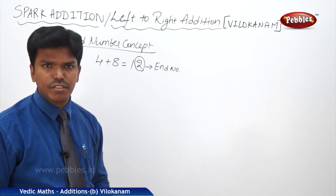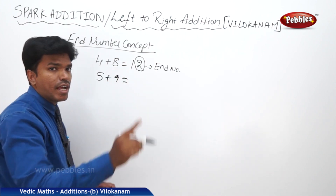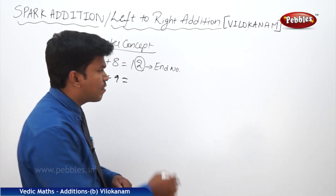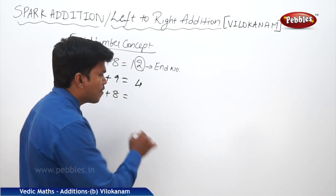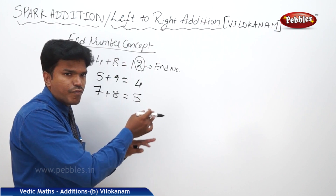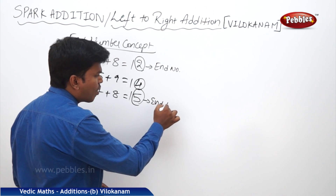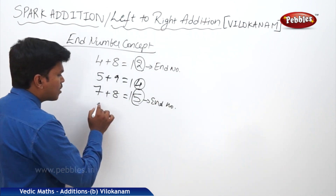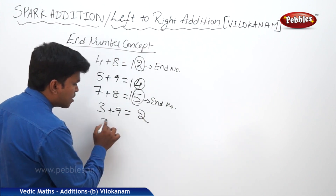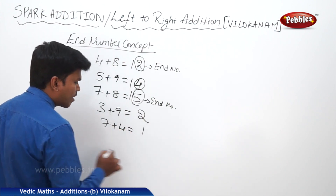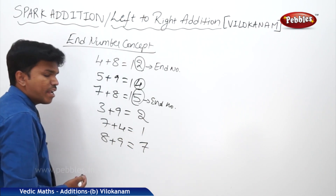What is 5 plus 9? That's 14, so the end number is 4. What is 7 plus 8? That's 15, so the end number is 5. What is 3 plus 9? The end number is 2. What is 7 plus 4? The end number is 1. What is 8 plus 9? The end number is 7.